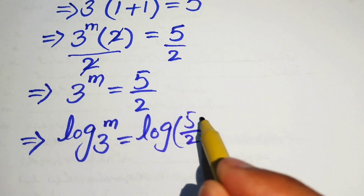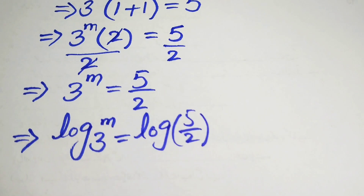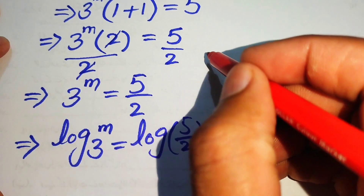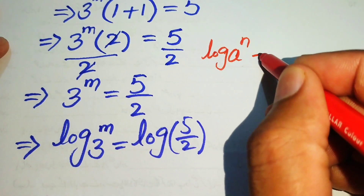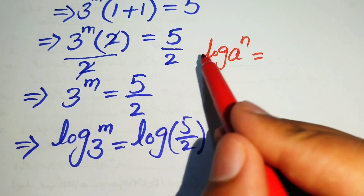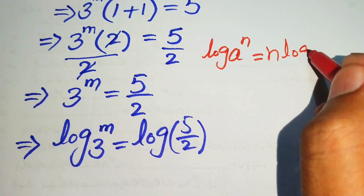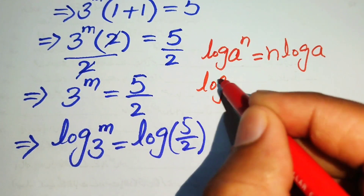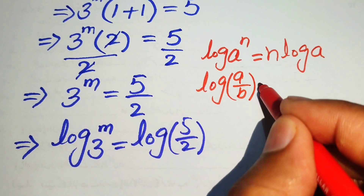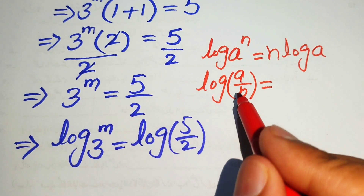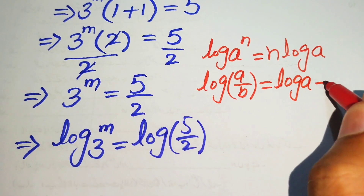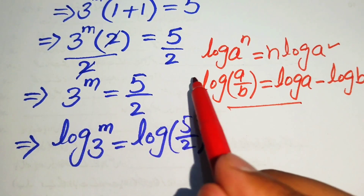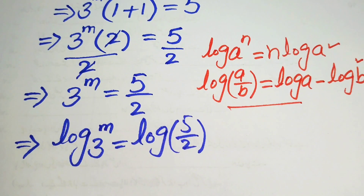We need two properties of logarithms. First, log of a to the power of n equals n times log a — the exponent moves to the front. Second, log of a over b equals log a minus log b — division inside the log becomes subtraction of two separate logs.